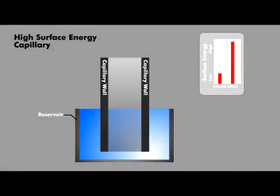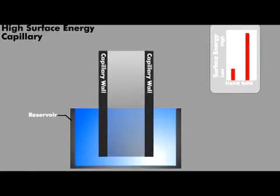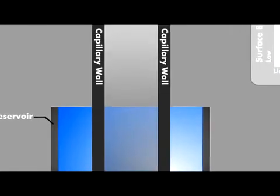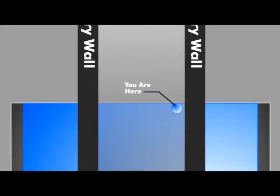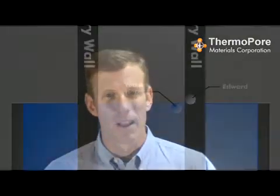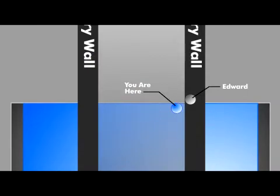Imagine yourself as a water molecule that suddenly gets surrounded by a glass capillary tube. Everywhere you look, you see the inner diameter of a capillary tube, and because of the tube's high energy level, it's very unhappy. Let's give one of these molecules in the glass capillary a name that starts with an E as in energy. How about Edward? Let's assume that Edward is located on the capillary's inner diameter — in other words, Edward can see you.